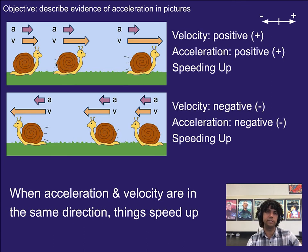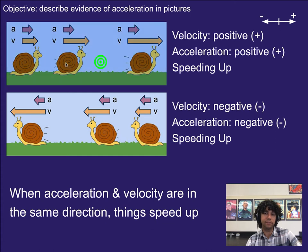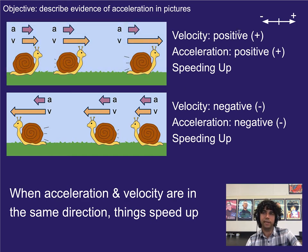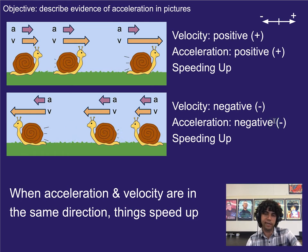Looking at this image, we can see that the snail is speeding up in both of these images because the spacing is increasing. That tells us that its velocity and its acceleration are in the same direction. So if we know what direction it's moving and we know it is speeding up, we also know the direction of its acceleration. Here the velocity is in the positive direction and since it's speeding up, the acceleration is also positive. In the other image, moving to the left means negative velocity, and since it's speeding up, the acceleration is also negative.